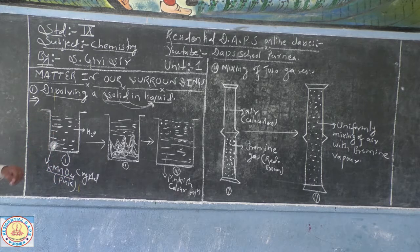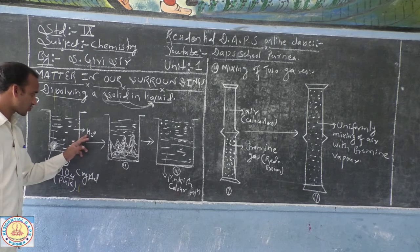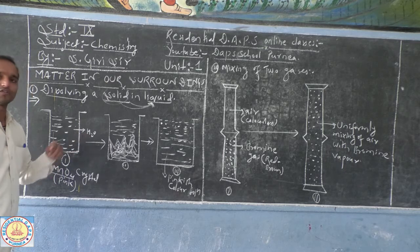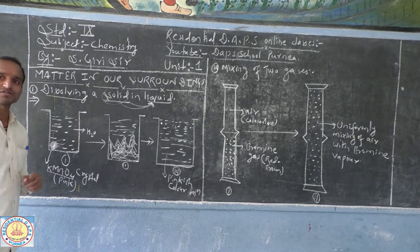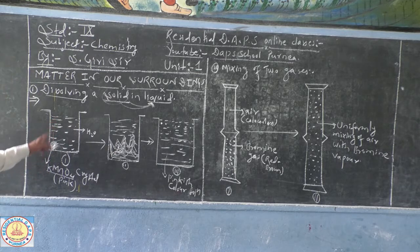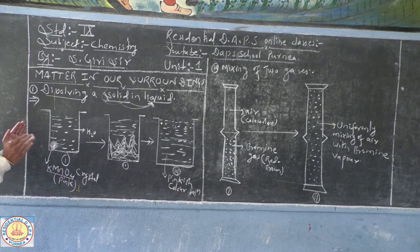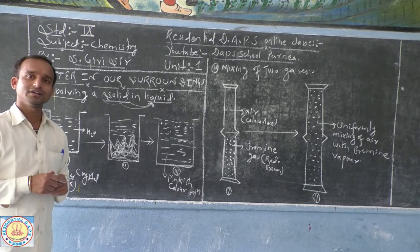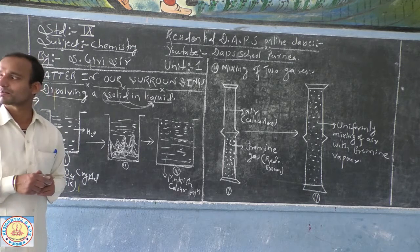Now what happens? The H2O particles, because H2O is also a compound, it is also matter, it is also made up of many tiny particles. These H2O particles start to strike and break the potassium permanganate crystals into many tiny particles of potassium permanganate.